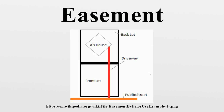For example, the owner of parcel A holds an easement to use a driveway on parcel B to gain access to A's house. Here, parcel A is the dominant estate, receiving the benefit, and parcel B is the servient estate, granting the benefit or suffering the burden.